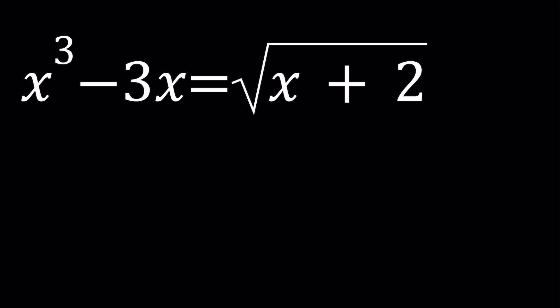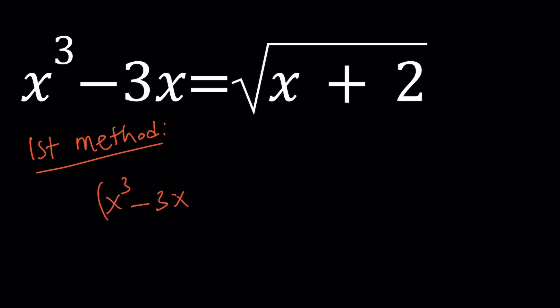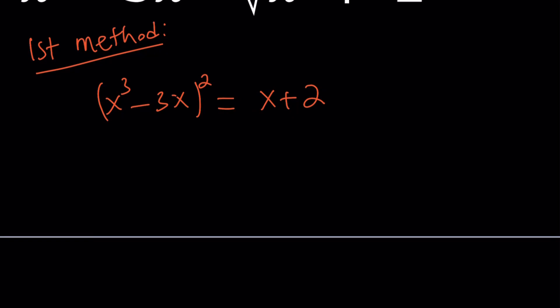I'll be presenting two approaches, even though the first method is not going to be very helpful — we'll still talk about it. So let's start with the first method, which will obviously be incomplete for a good reason. When we have radical equations, a lot of times we want to get rid of the radical, so let's go ahead and square both sides. That gives us x plus 2 on the right-hand side, and on the left-hand side we have to square the difference, giving us x to the 6th power minus 6x to the 4th power plus 9x squared, equal to x plus 2.